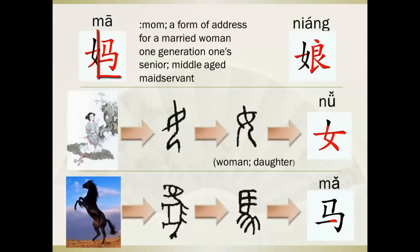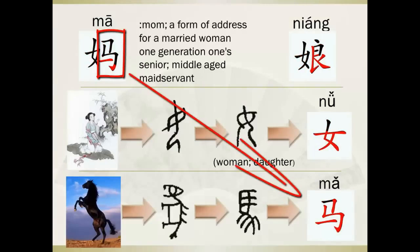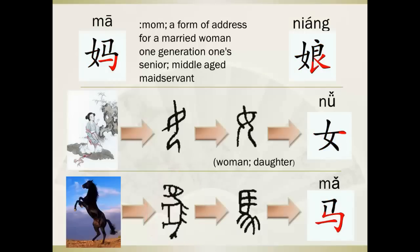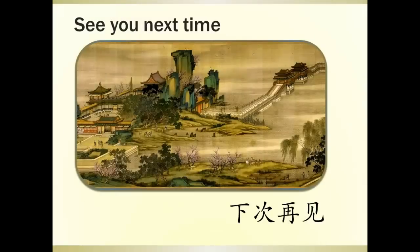The right part of 妈 is the zi 马 (mǎ), which indicates the pronunciation. 马 means horse — you can see its jiaguwen form looks like a rearing horse. 马 has a similar pronunciation to 妈, the difference being the tone: 马 uses the third tone (mǎ), while 妈 uses the first tone (mā). That's it for today's lecture. I'll see you next time. 下次再见.